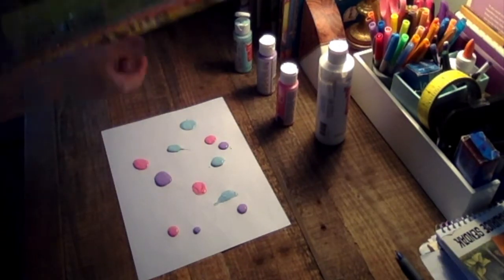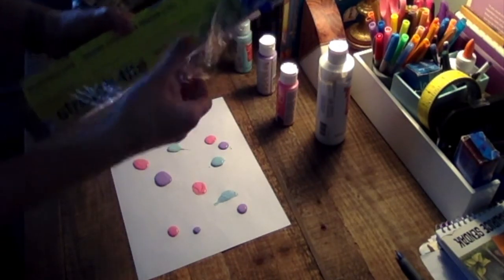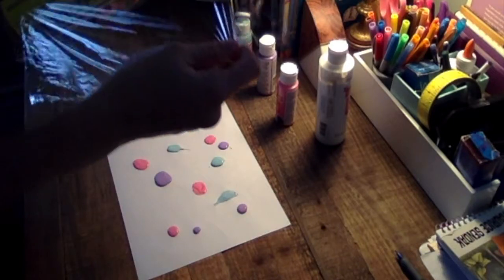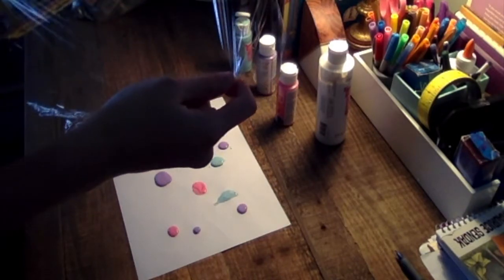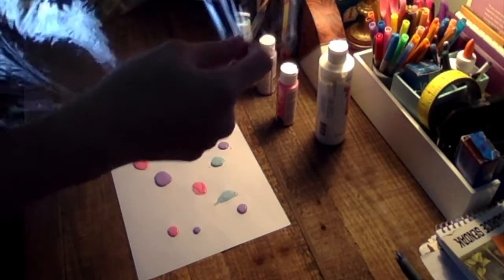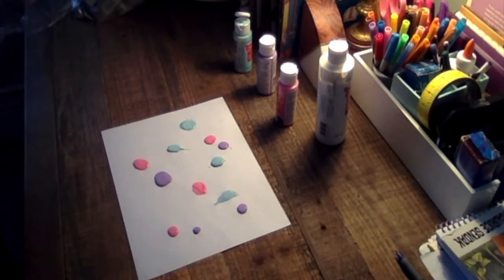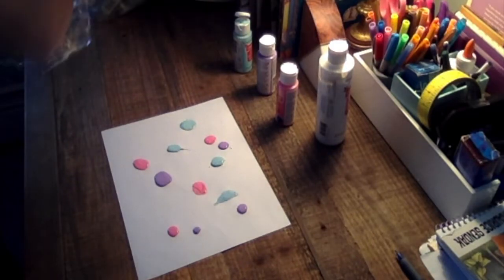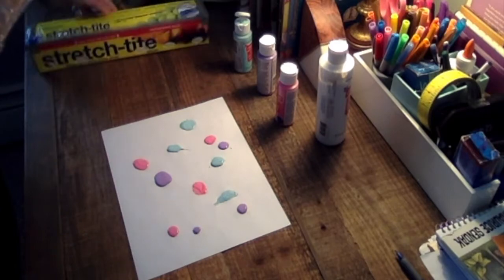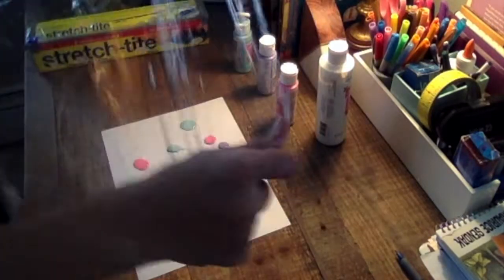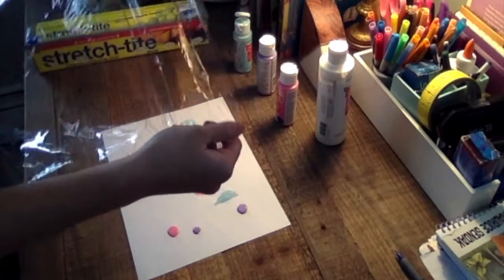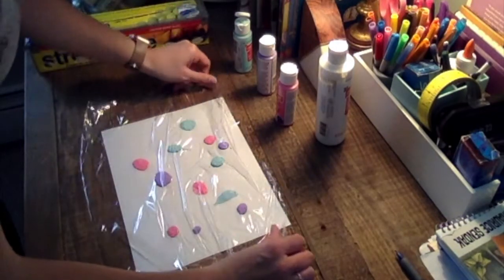What you're going to do is take the plastic wrap. Take enough that will cover your whole piece of paper. Cut that off. Then you're going to put your plastic on top of your paper, like this.